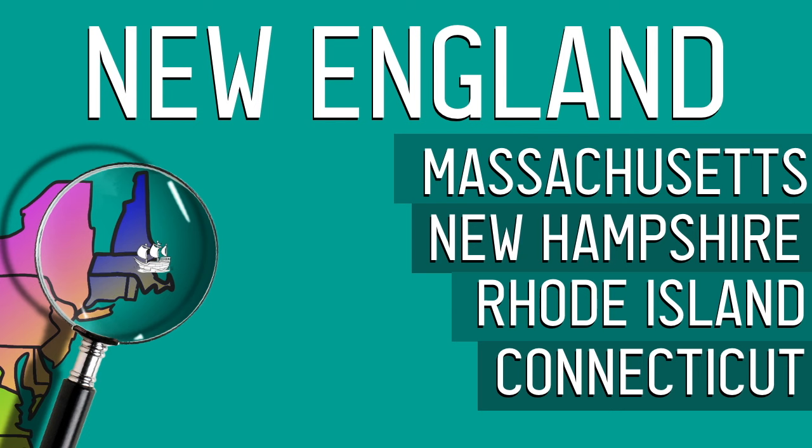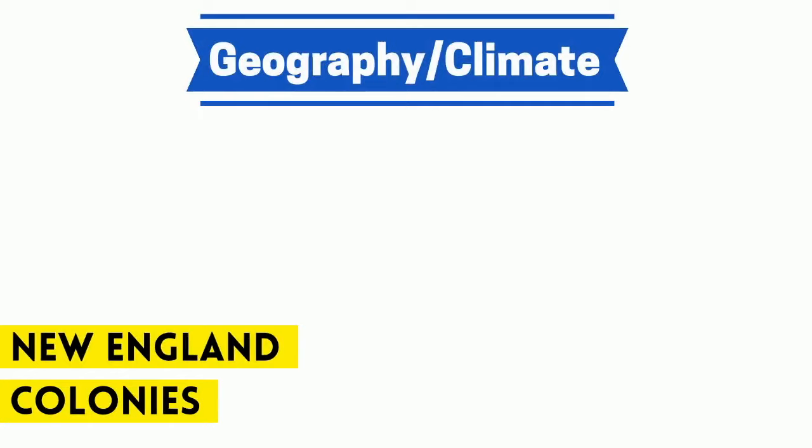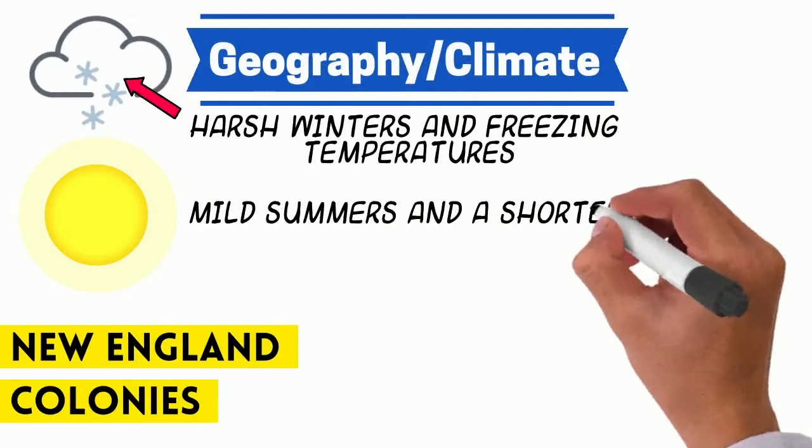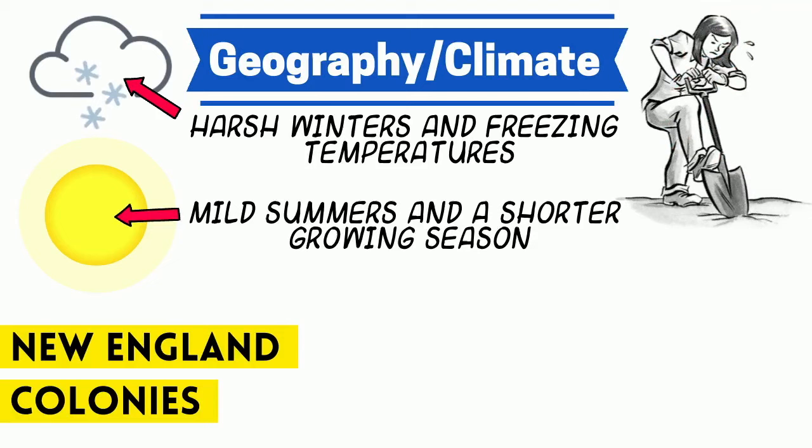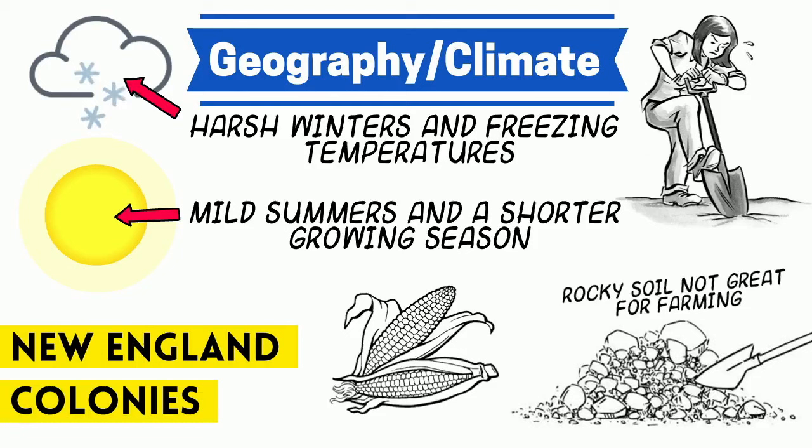The New England colonies had a really rough climate. They had harsh winters and freezing temperatures, and really mild summers with a shorter growing season. We know this from the story of the Pilgrims — they really struggled to survive in the beginning because they had rocky soil that was not great for farming.